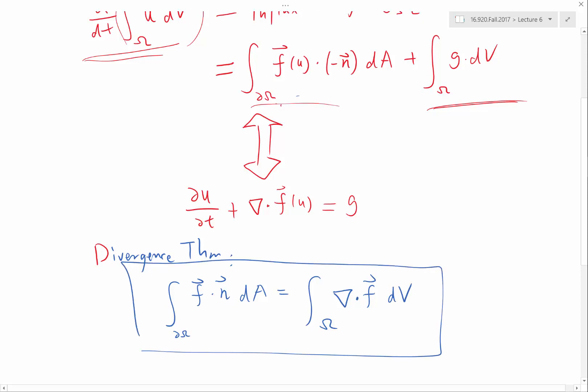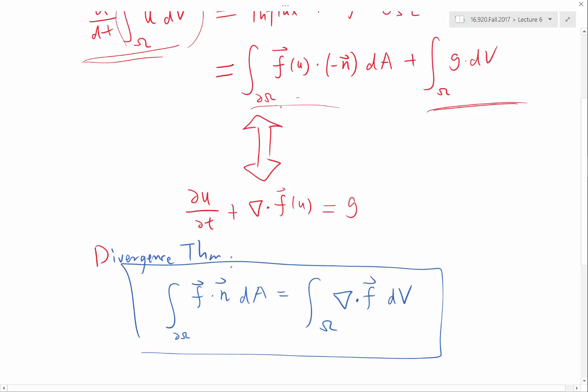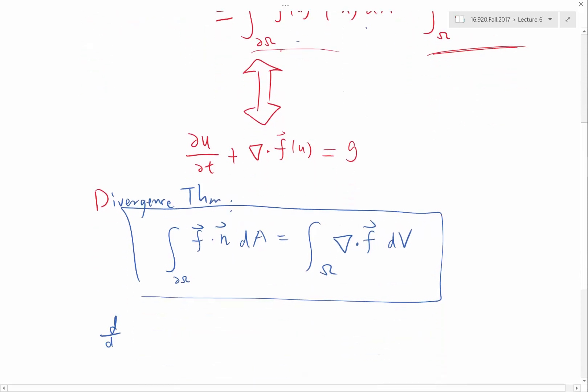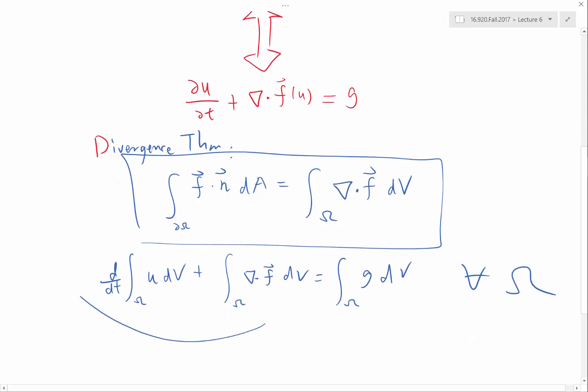Applied to over here, remember there is a minus sign here, so we move this to the left-hand side. So, we have d/dt of integration of u dV plus integration divergence F dV equal to integration g dV. Because this has to be true for any omega, that gives me this equation.